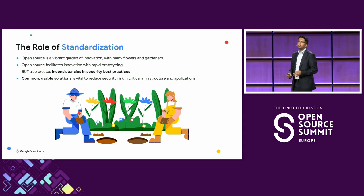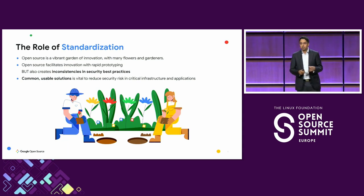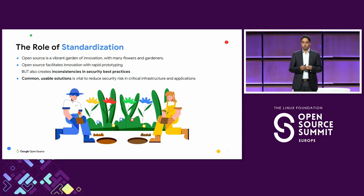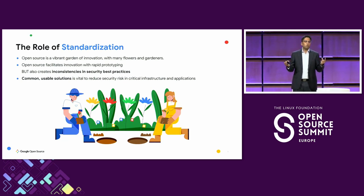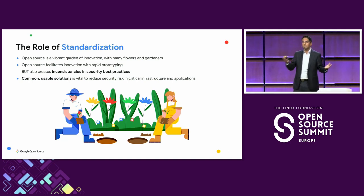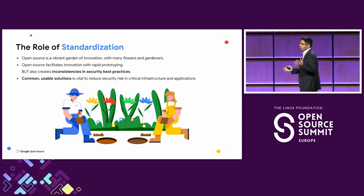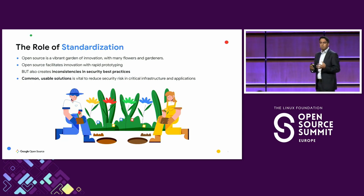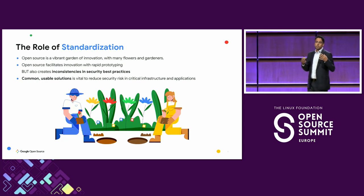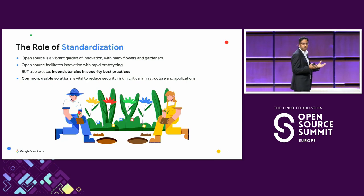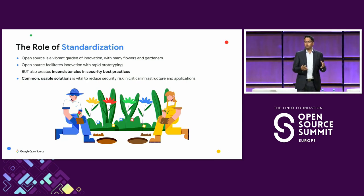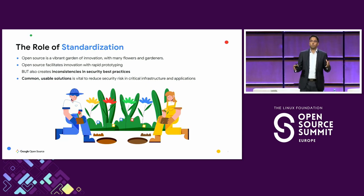So what's our vision for the future look like? Today, we will touch base on three key elements that we believe will drive real, meaningful change in open source security. The first one is standardization. As you all know, open source is a very vibrant garden of innovation with a lot of diverse languages, tools, and frameworks. But with this, fragmentation brings in security challenges, which often leads to inconsistent application of security best practices. Hence, we need common usable standards to bring down this risk of consuming open source.